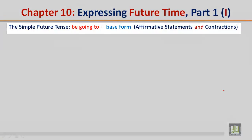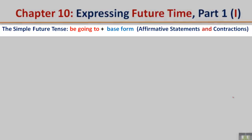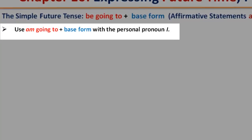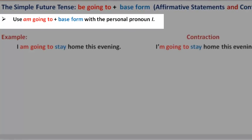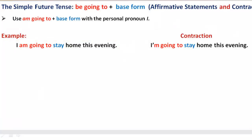The simple future tense: be going to plus the base form — affirmative statements and contractions. Use am going to plus the base form with the personal pronoun I. Example: I am going to stay home this evening. Contraction: I'm going to stay home this evening.